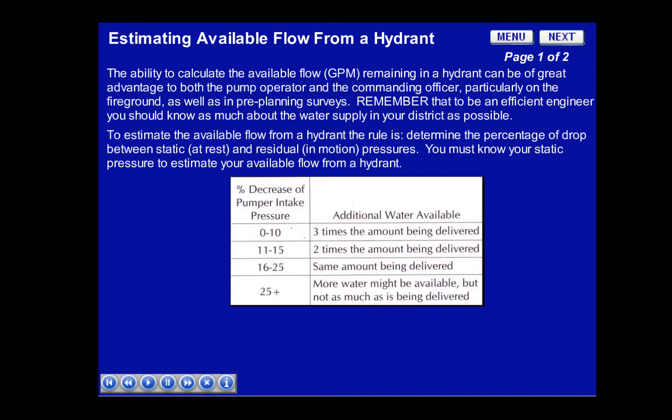This chart shows additional water available using the percentage of loss from the intake pressure. For instance, if you have a 10% or less loss — which is the difference between the static and residual pressure — you will be able to supply three more like volumes as the original line. If you have a loss of 11% to 15%, you will only be able to allow for two more like volumes.